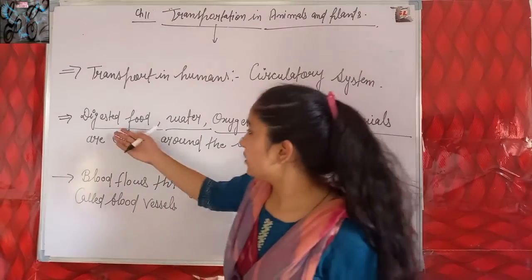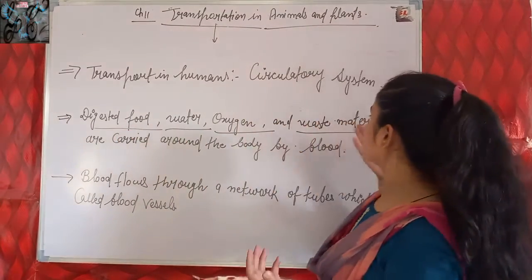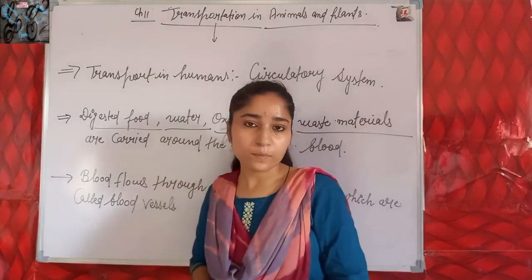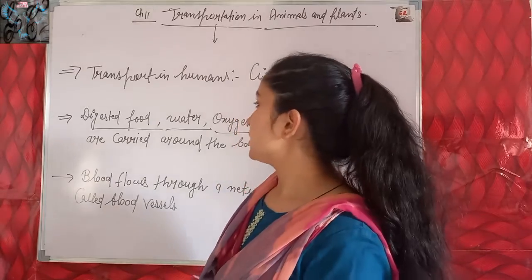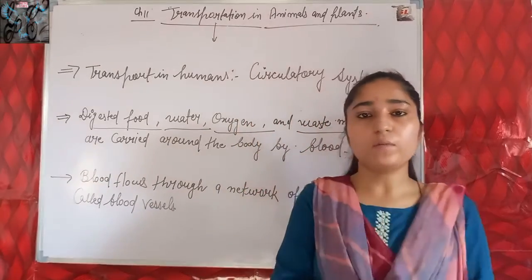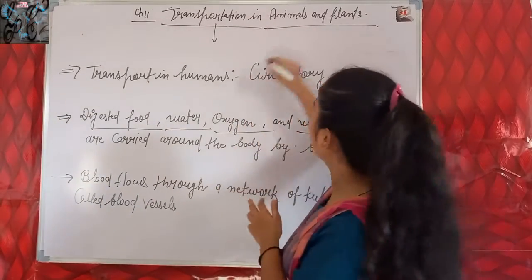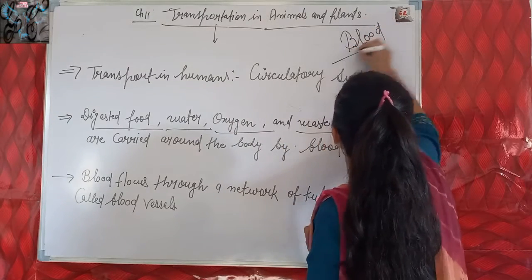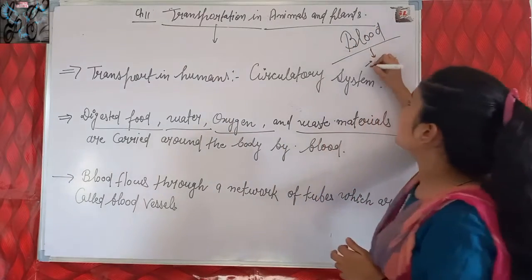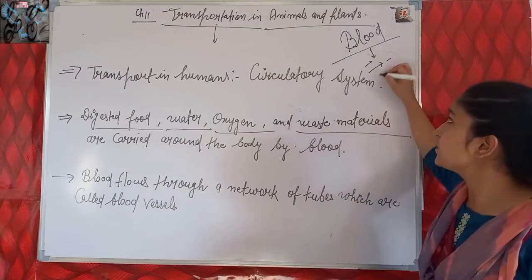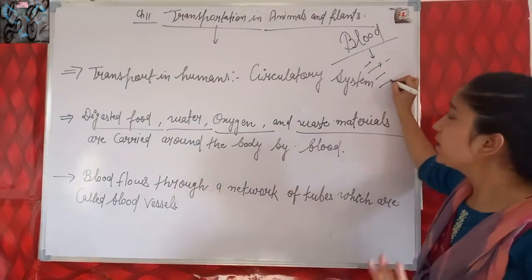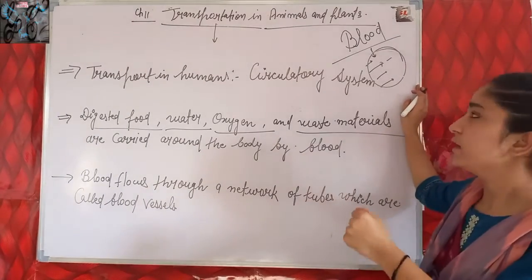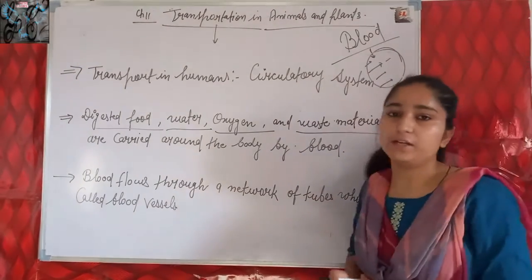Digested food, water, oxygen, and waste material in our body are transported from one place to another with the help of blood. All these substances - digested food, oxygen, water, and waste material - are carried from one place to another in our body with the help of blood.